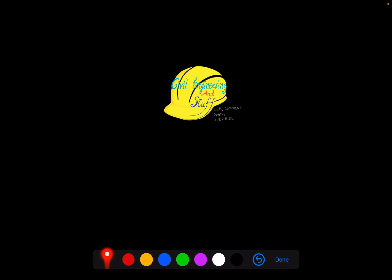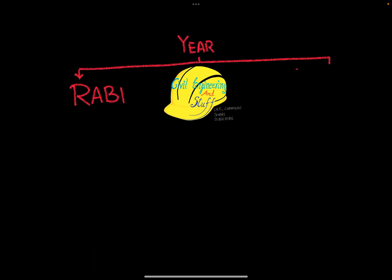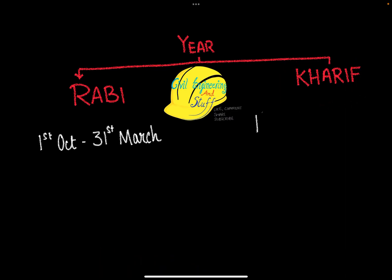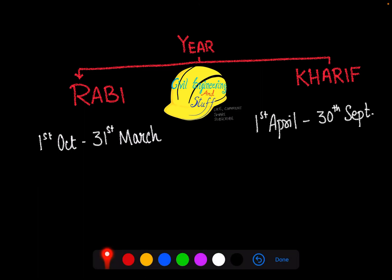Throughout the year, if we want to bifurcate the year in terms of the crops that are sown in India, the year can be divided into two seasons. The first one is the Rabi season and the second one is the Kharif season. The Rabi season starts from the 1st of October and goes till 31st of March, and the Kharif season starts from the 1st of April and goes towards the 30th of September.